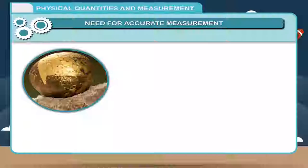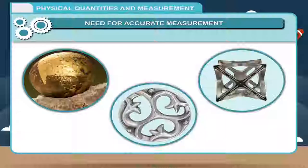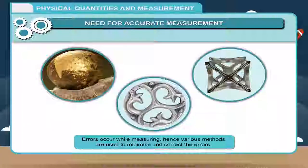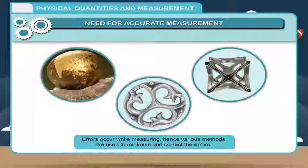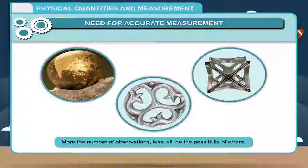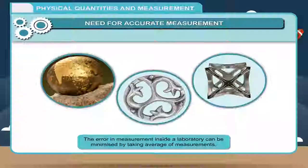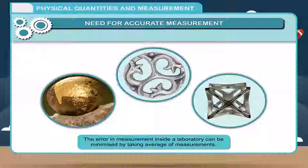Expensive metals like gold, silver, and platinum are weighed extremely accurately. Errors occur while measuring, hence various methods are used to minimize and correct the errors. More the number of observations, less will be the possibility of errors.